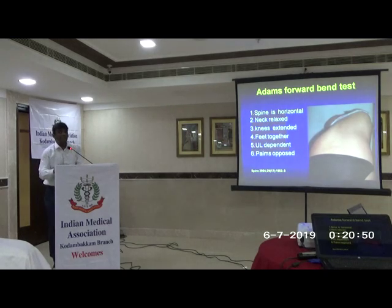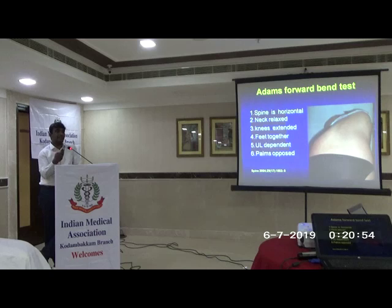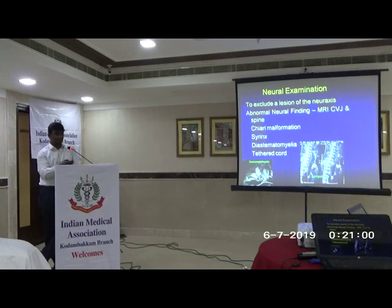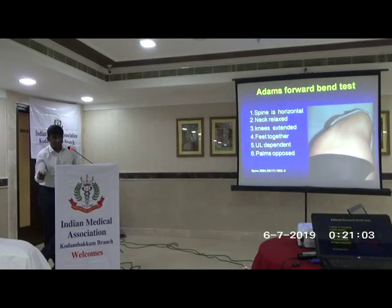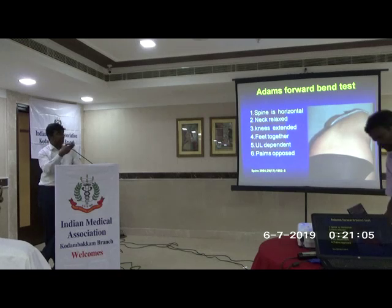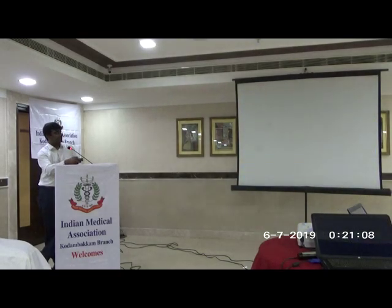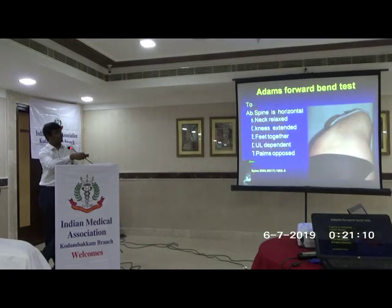In some countries abroad, they have school screening programs where they identify and pick up scoliosis at a very early stage. This is the most common test used. If you ask the patient to bend forward, the rib hump becomes prominent. This is the Adams forward bend test, used to identify scoliosis at an early stage.